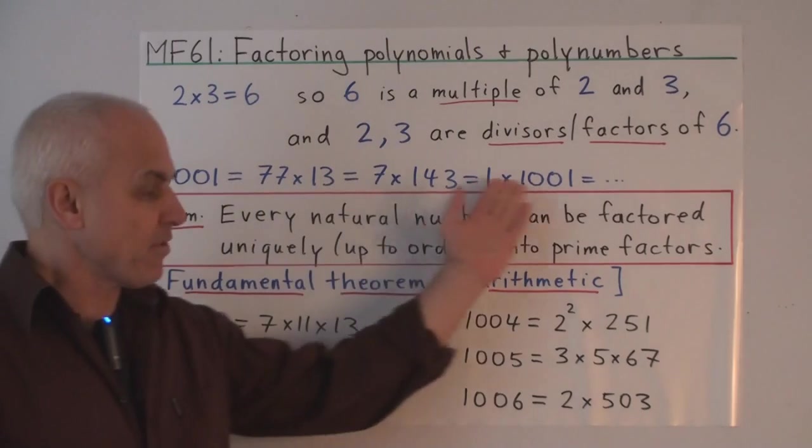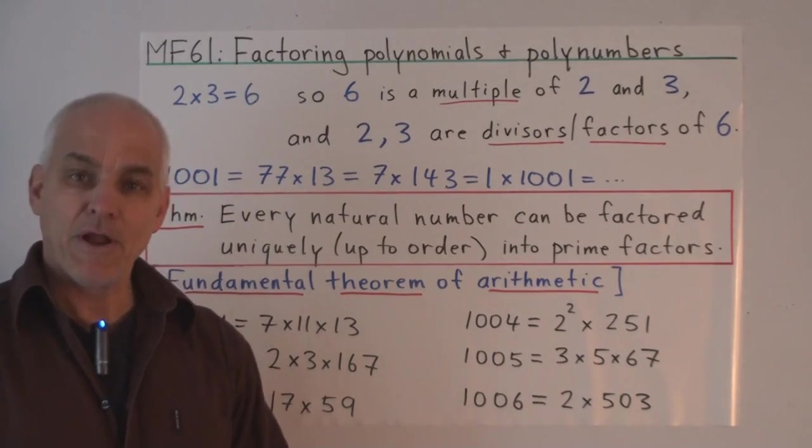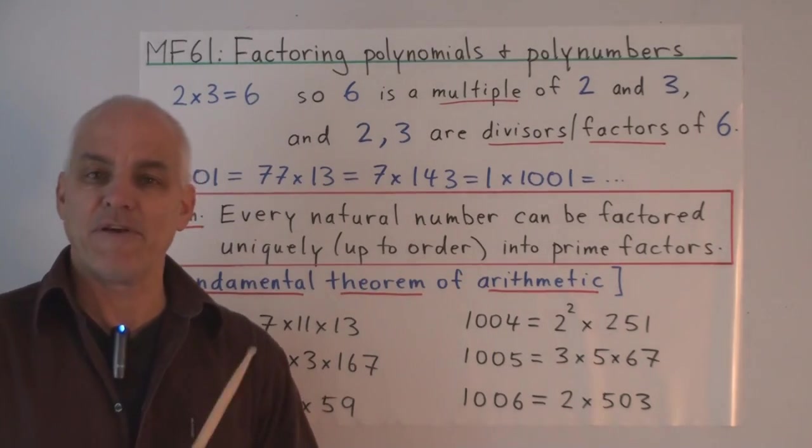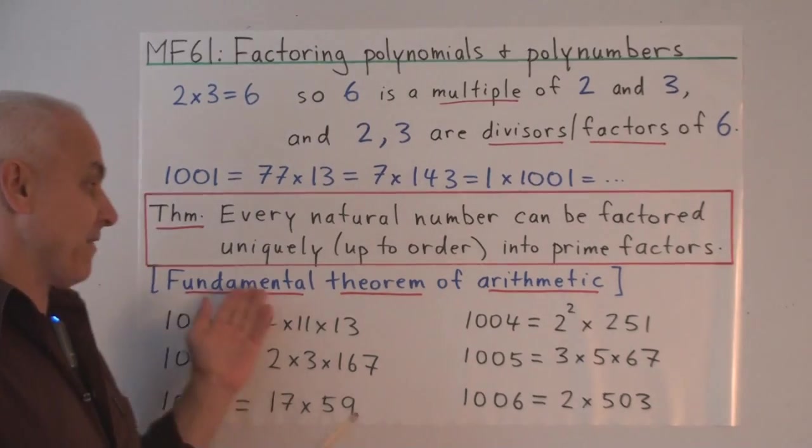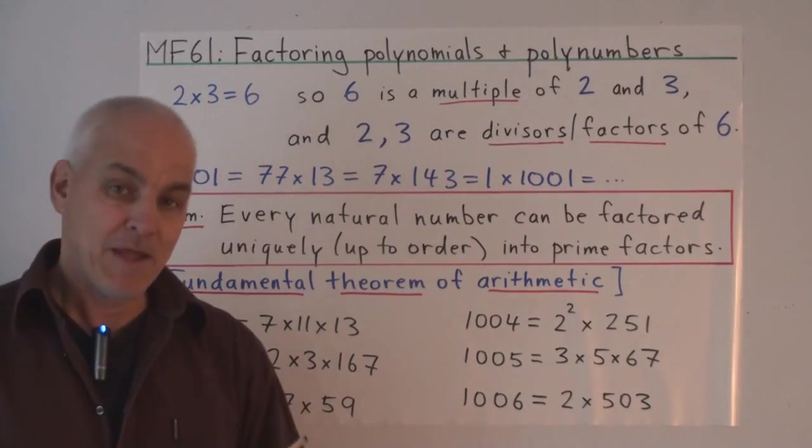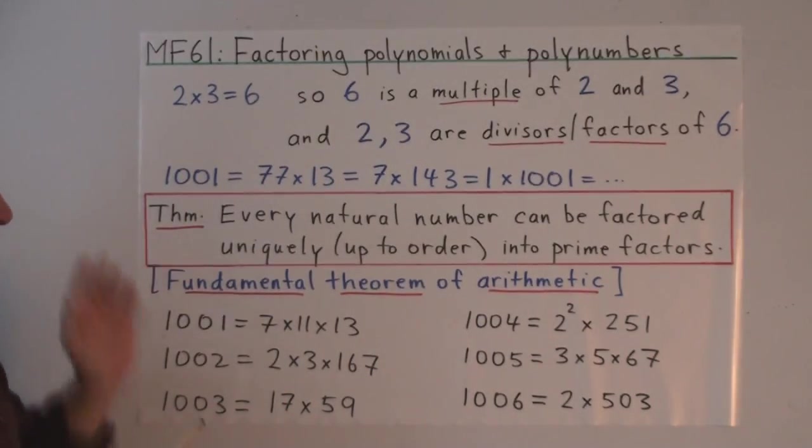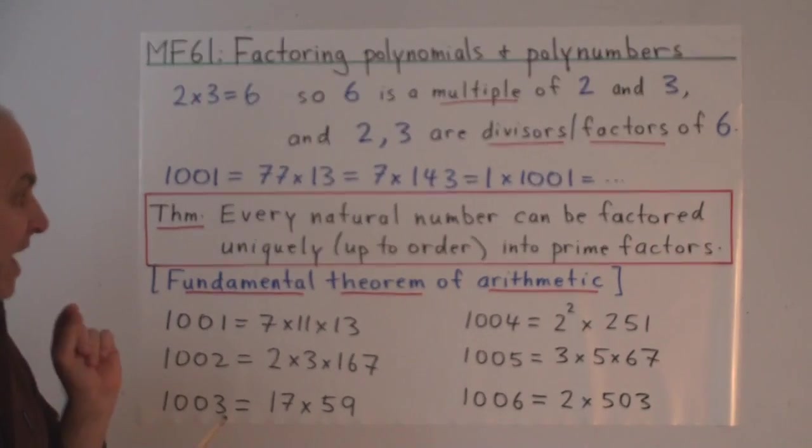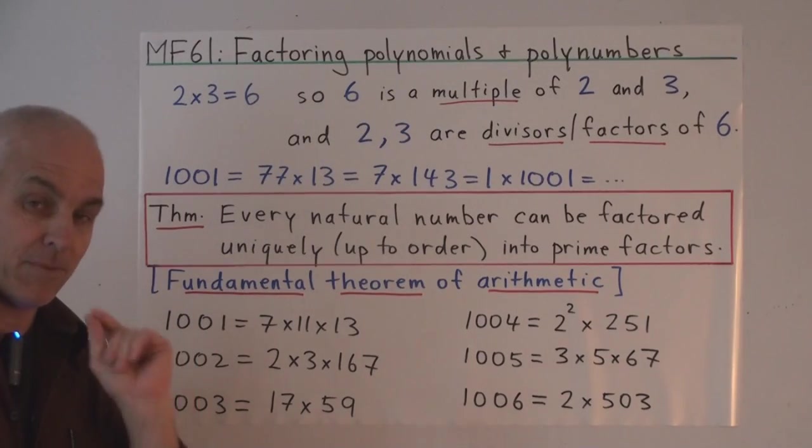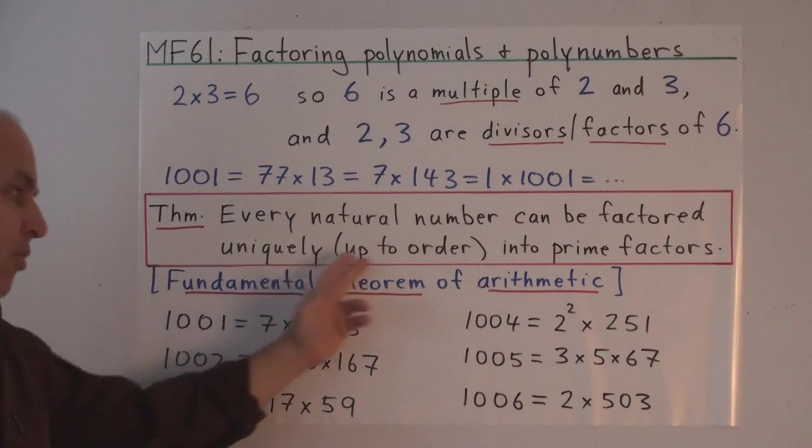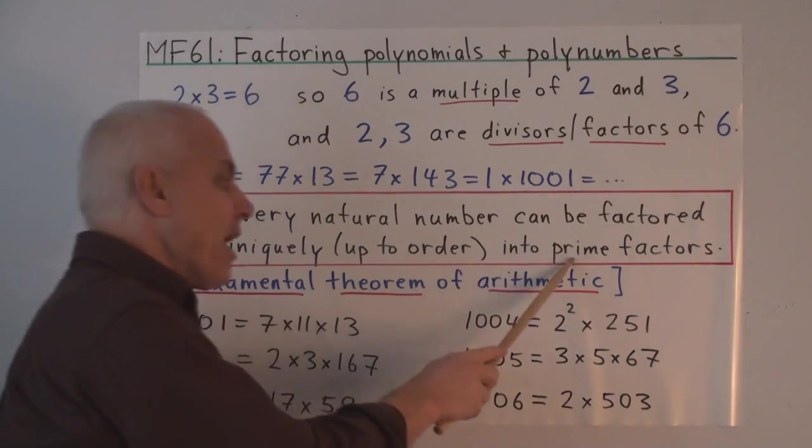So, although it may appear that there's lots of different ways of factoring a number, there's a very important and fundamental theorem called the fundamental theorem of arithmetic, which says that every natural number can be factored uniquely, in other words, in only one way up to order, into prime factors.